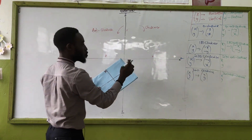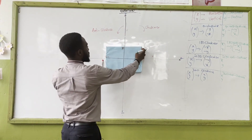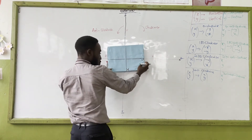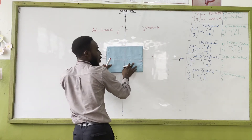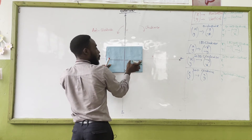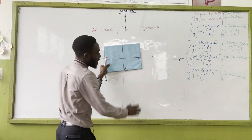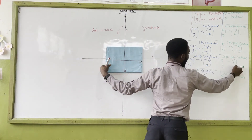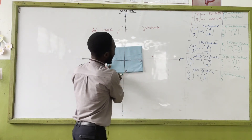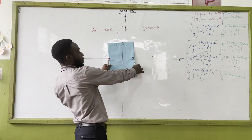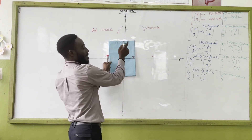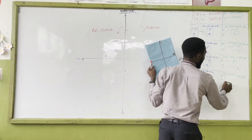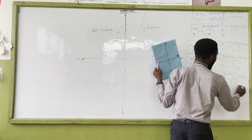For 270° anti-clockwise, moving three times: horizontal gives y and vertical gives negative x. So (x, y) → (y, -x). And finally 360° anti-clockwise brings us back to the origin: (x, y) → (x, y).